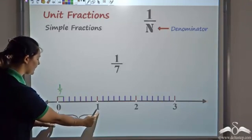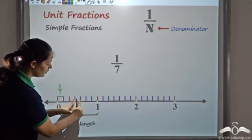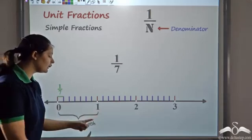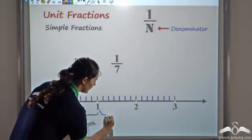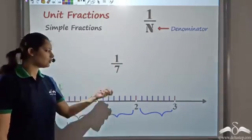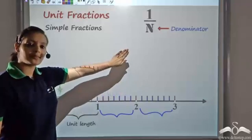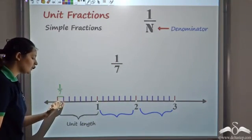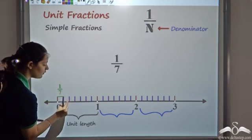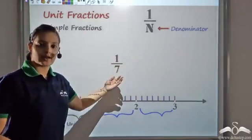So I have this unit length and I divide it into seven equal parts: one, two, three, four, five, six, seven. Similarly from one to two, this is also a unit length, so any unit length could be divided into seven equal parts. And what does one by seven tell me? One by seven gives me one of those equal parts — it is actually telling me the length of one such equal part. That is how I can read unit fractions.